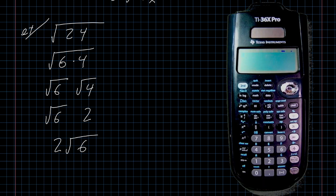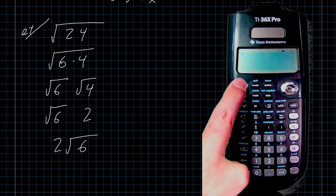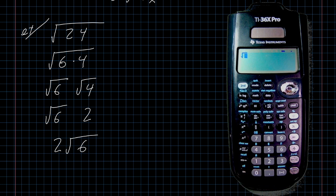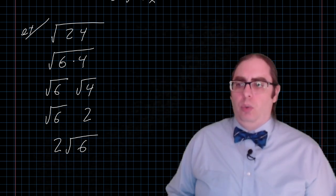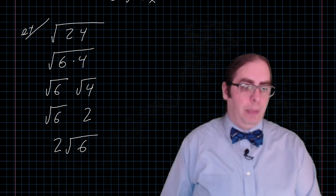This is one of those places where a calculator can be incredibly valuable. Not every calculator, but a lot of calculators have a pretty print feature. So if I put the square root of 24 into my calculator, it gives me 2 times the square root of 6. This doesn't mean that you don't need to be able to do this by hand. Although I guess kind of it does.